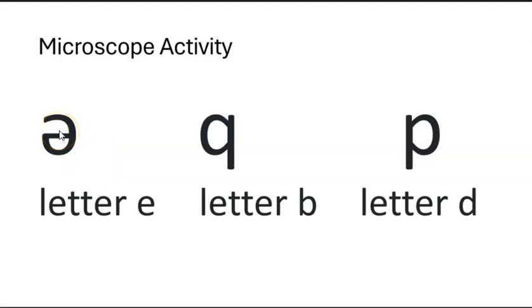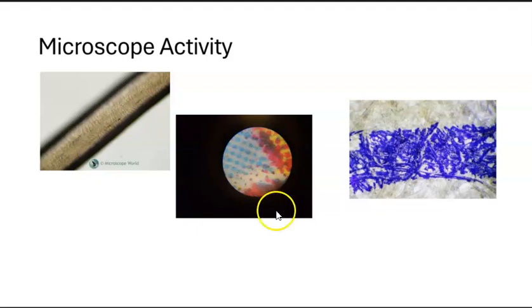The following are the images seen under the microscope for letter E, letter B under the microscope, and the image of letter D under the microscope. This is the image of the strand of hair, the colored portion in the newspaper, and this is the handwriting.